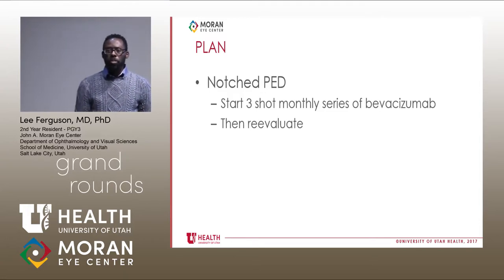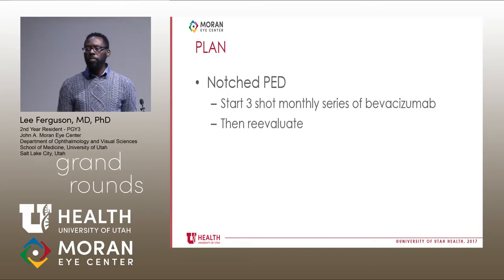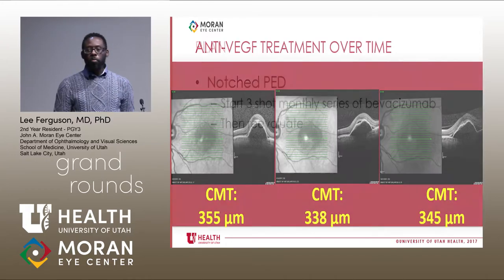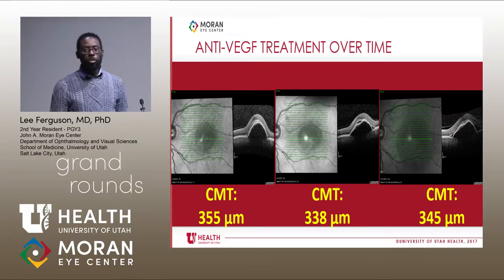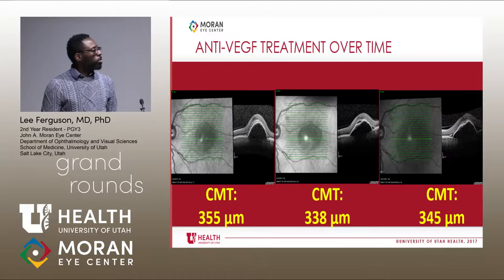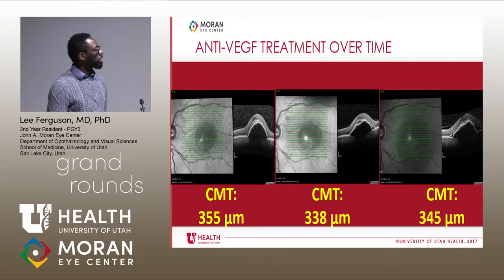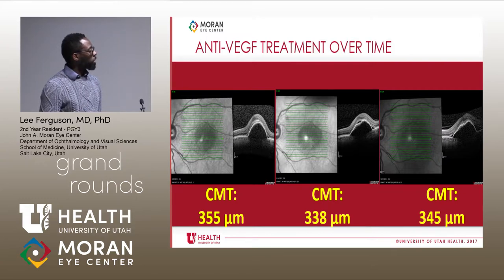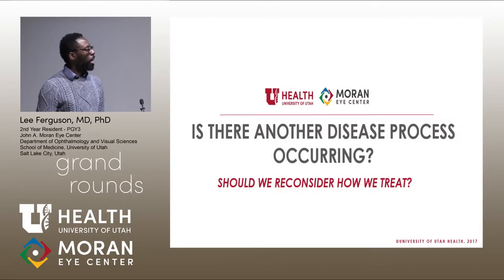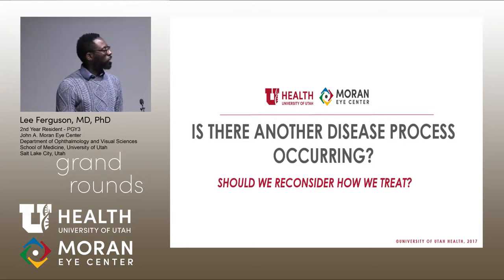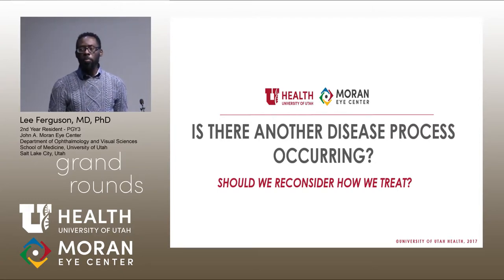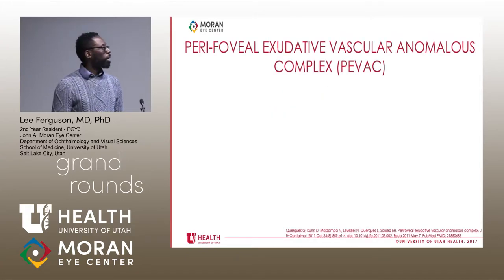Our plan for this individual with the notched PED was to start with anti-VEGFs — Avastin was our common first choice. After about a three-shot series we would reevaluate. Over three to four months of injections, he initially had a decrease in his central macular thickness but then eventually plateaued. At this stage we were scratching our heads — essentially this process was not amenable to anti-VEGF therapy. Could there be something else going on, and should we alter our treatment as a result?